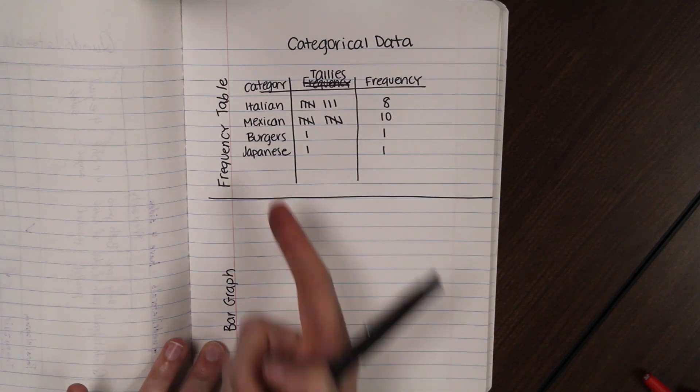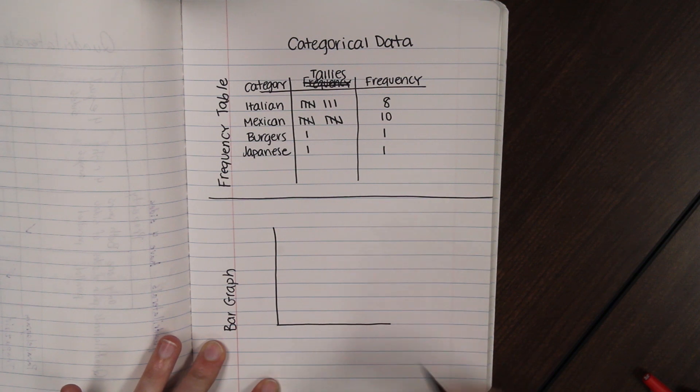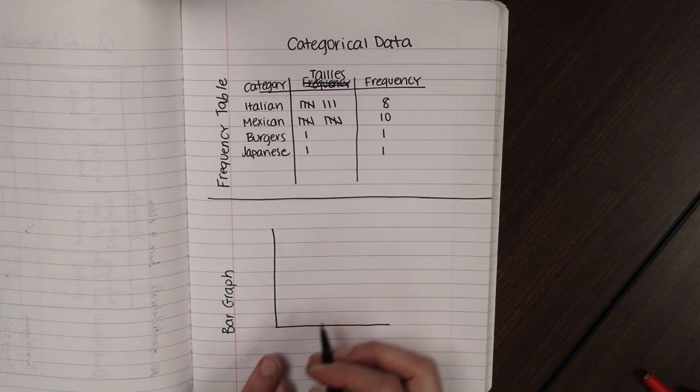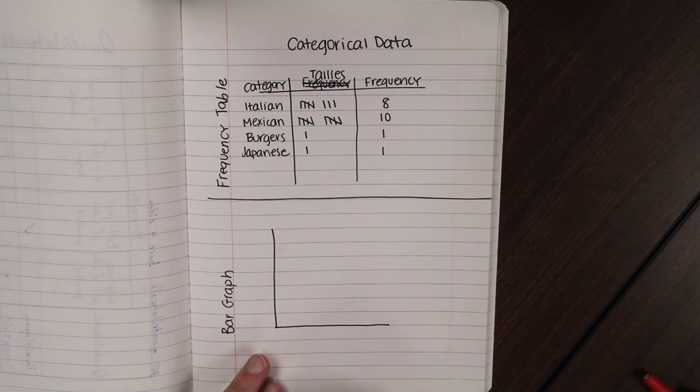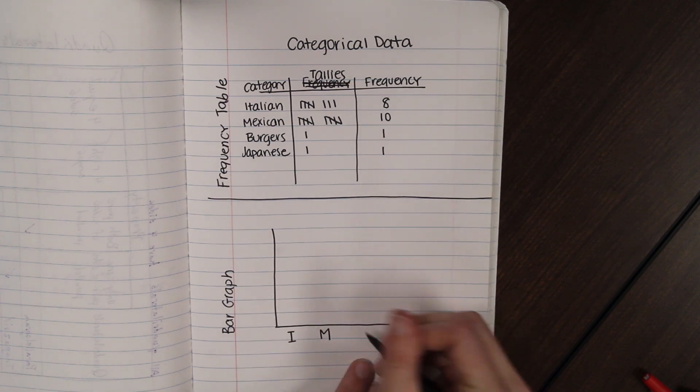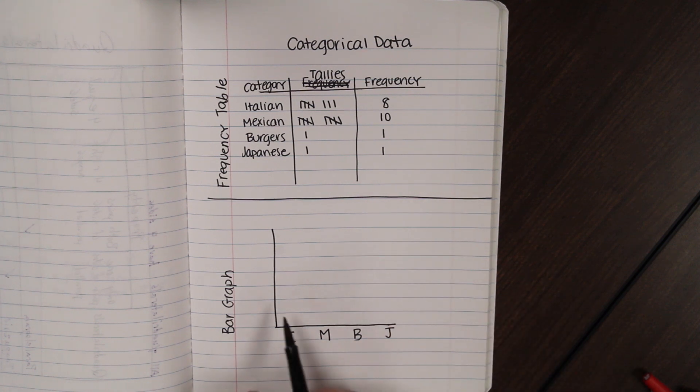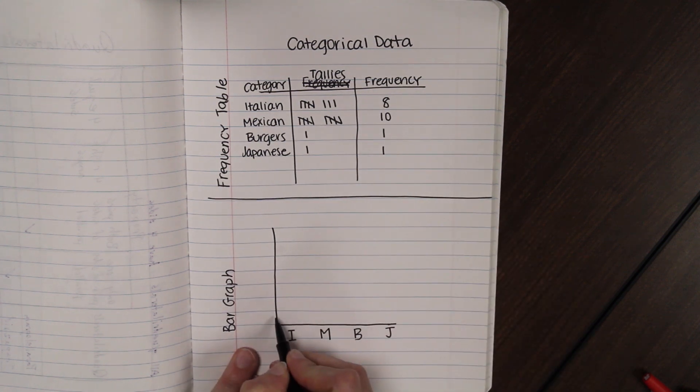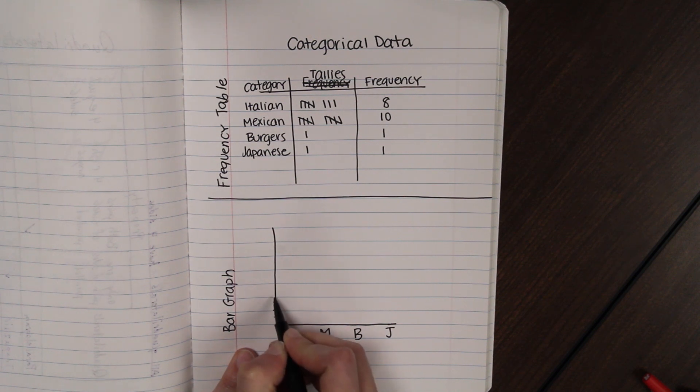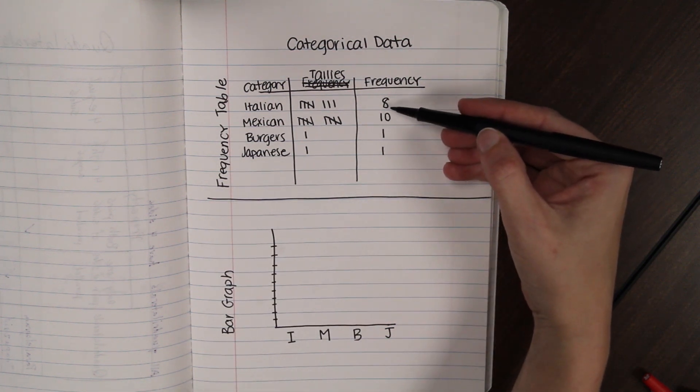These you should be very familiar with. We're going to use the same data. A little L here. We're going to, you can label either on the Y axis or the X axis your categories. I like to do the X axis. So I'm going to do I for Italian. M for Mexican. B for burgers. And J for Japanese. And then up the top, you're going to put the frequency. So I'm going to put like ten tally marks. So one, two, three, four, five, six, seven, eight, nine, ten. We're going to make the bar go up as high as it should in the frequency table.